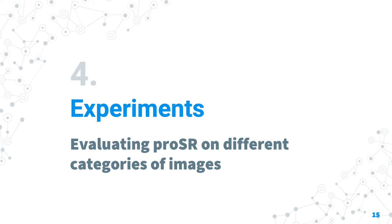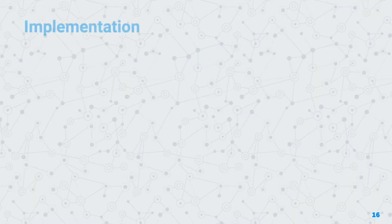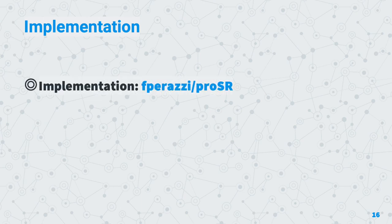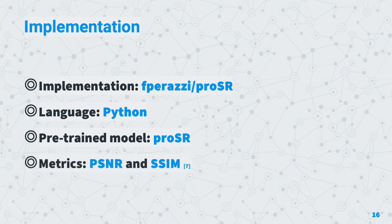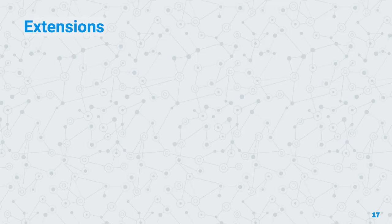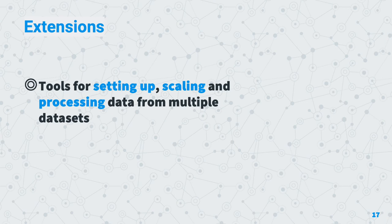Moving to the experiments section, we evaluate ProSR on different categories of images. The implementation used is from Perazzi — a GitHub repository named ProSR written in Python — using a pre-trained model without additional training. The metrics used are peak signal-to-noise ratio (PSNR) and structural similarity index (SSIM). Extensions made to the repository include tools for setting up, scaling, and processing data from multiple datasets to make evaluation quicker.